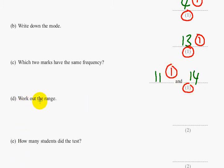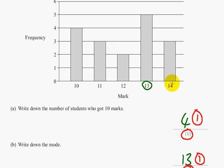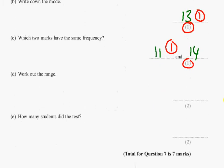Part D. Work out the range. The highest mark was 14, the lowest mark was 10. So therefore 14 subtract 10 is 4. And that's worth 2 marks, so 1 for the calculation and 1 for the answer.